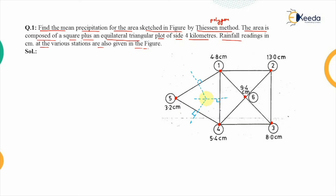These three bisectors meet at a single point. Correspondingly, bisectors are drawn for stations one and two, three and four, two and three, and between one and six. When you extend and combine all of them, a set of enclosed areas is obtained.